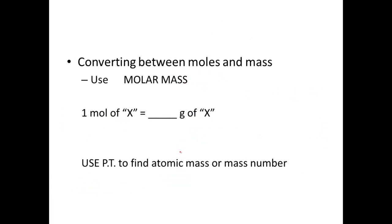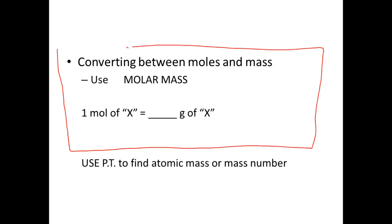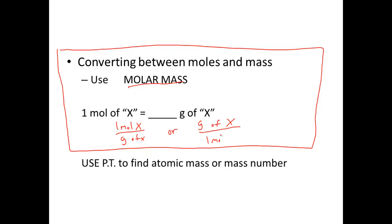When converting between moles and mass, use molar mass. There's a box in your notes — make sure you include this information. Your two conversion factors are: one mole of X over grams of X, or grams of X over one mole of X. Use your periodic table to find the atomic mass so you can plug that into the grams for converting.